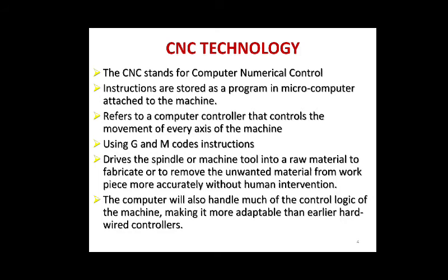In a CNC machine, the instructions are stored as a program in a microcomputer attached to the machine, which acts as a computer controller that controls the movement of every axis. By using codes — G codes and M codes — the movement of the tool is controlled, driving the spindle or machine tool. As a result, raw material is converted into a finished product, removing unwanted material from the work piece accurately without any human intervention. The computer also handles much of the control logic, making it more adaptable than earlier hardware controllers.